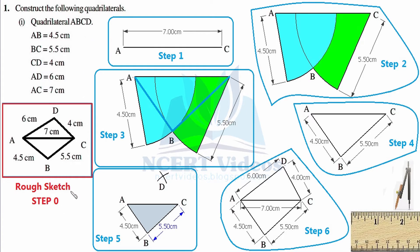Most of us get puzzled about how to draw a rough sketch, but it is very easy. Remember two concepts: first, a quadrilateral is always named in cyclic manner, either clockwise or anticlockwise. Before constructing a rough sketch, we must know what dimensions are given — whether they are sides or diagonals. For example, AB, BC, CD, and AD are all continuous vertices, so they represent sides.